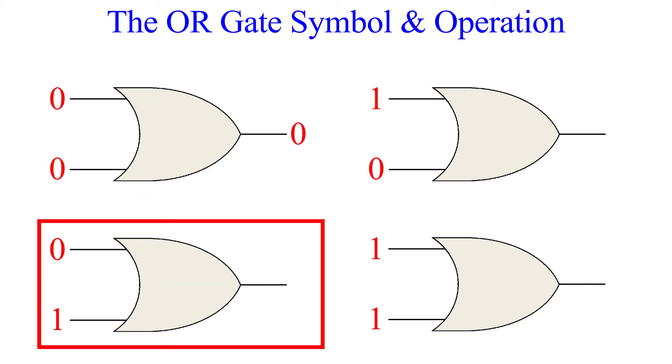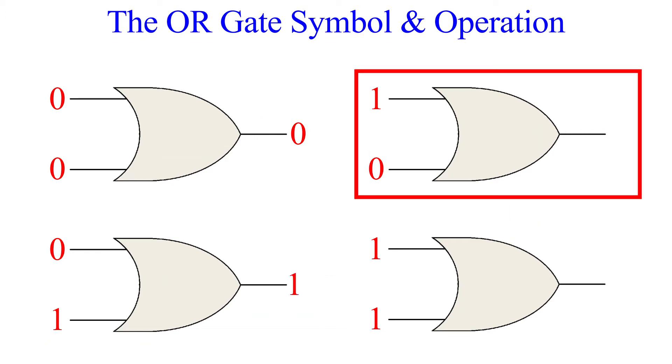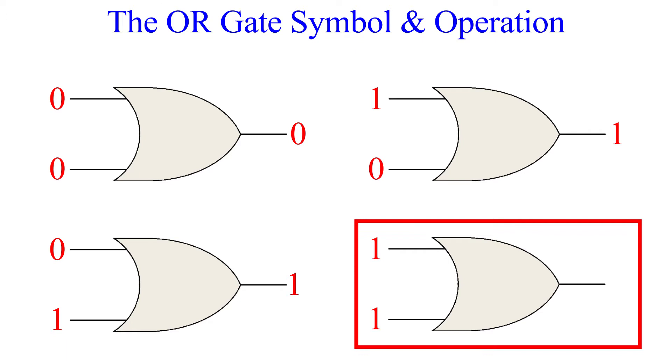The second gate has inputs of 0 and 1, so it has an output of 1. The third has inputs of 1 and 0, which is just a mirror of the previous gate. It has an output of 1. Lastly, the fourth gate has inputs of 1 and 1, so this gate too will have an output of 1.